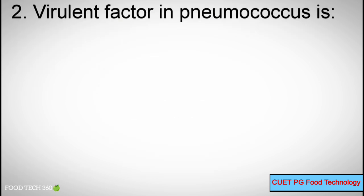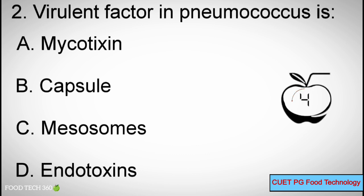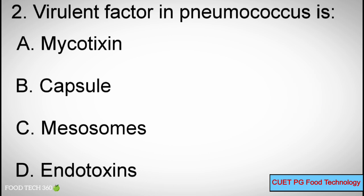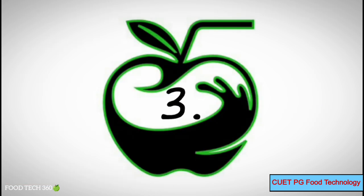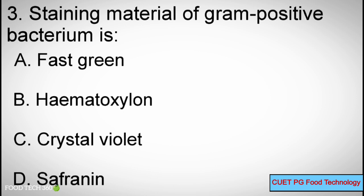Question number 2: Virulent factor in Pneumococcus is — Options: A) Mycotoxin, B) Capsules, C) Mesosomes, D) Endotoxins. Correct answer: D) Endotoxins.